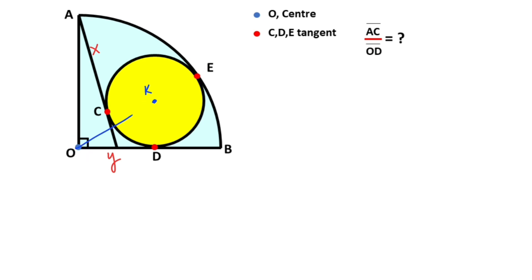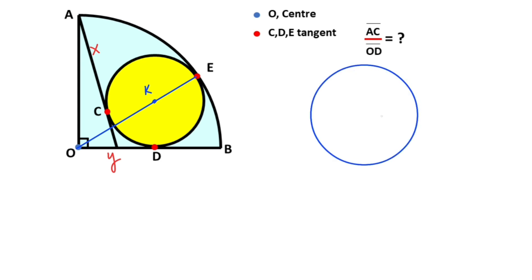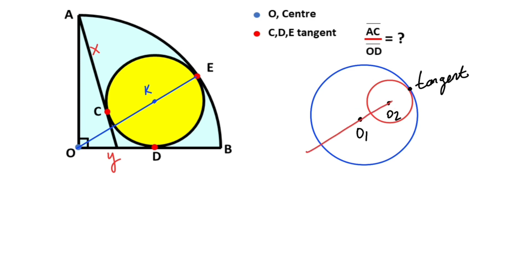If we connect these three points, this line must be collinear because of the tangents. Let me remind you: if you have two circles which are tangent to each other, and you call the tangent point and the two centers O1 and O2, then connecting these three points gives a straight line because of the tangents. Therefore, the line O-K-E must be collinear because of the tangents.